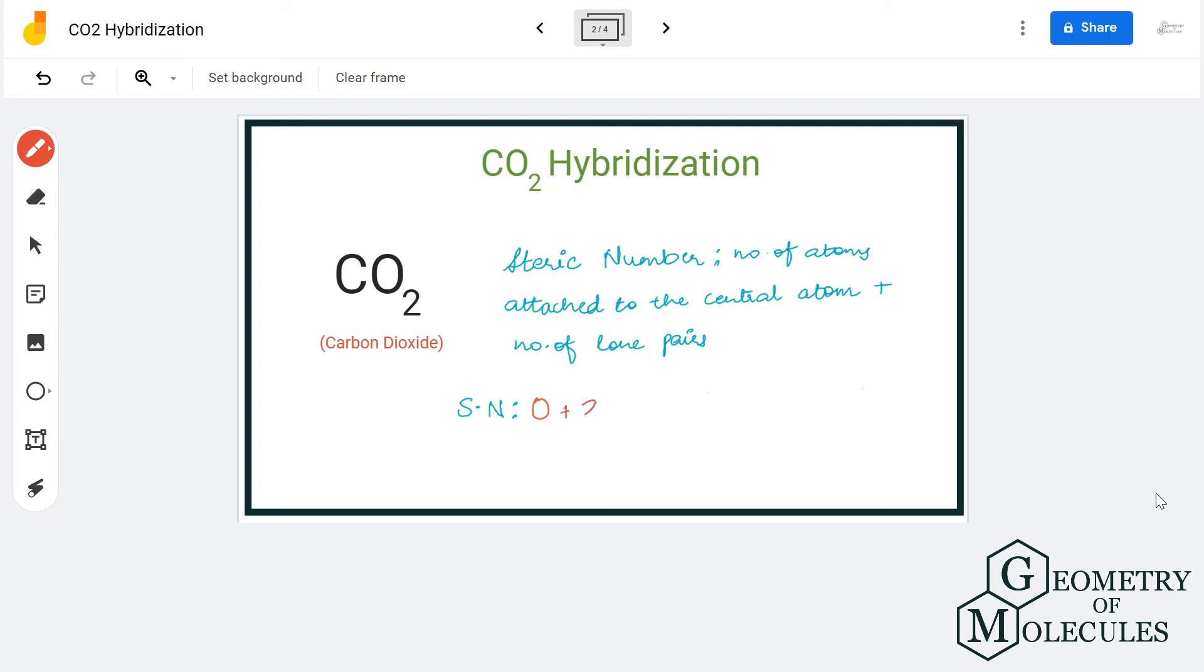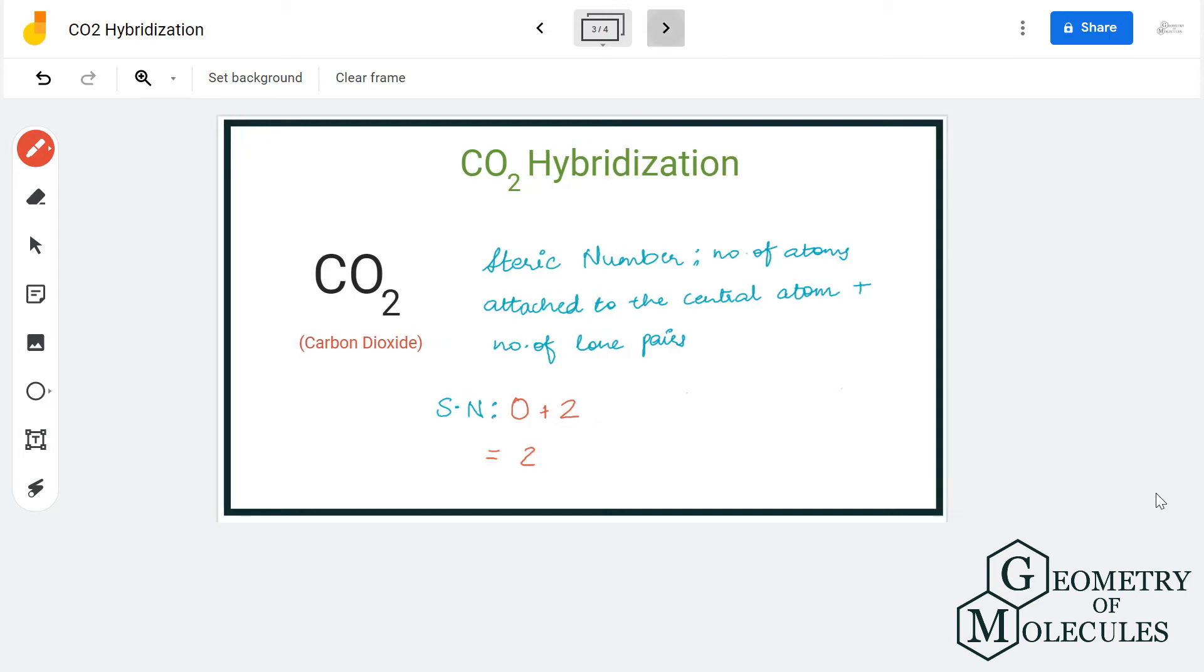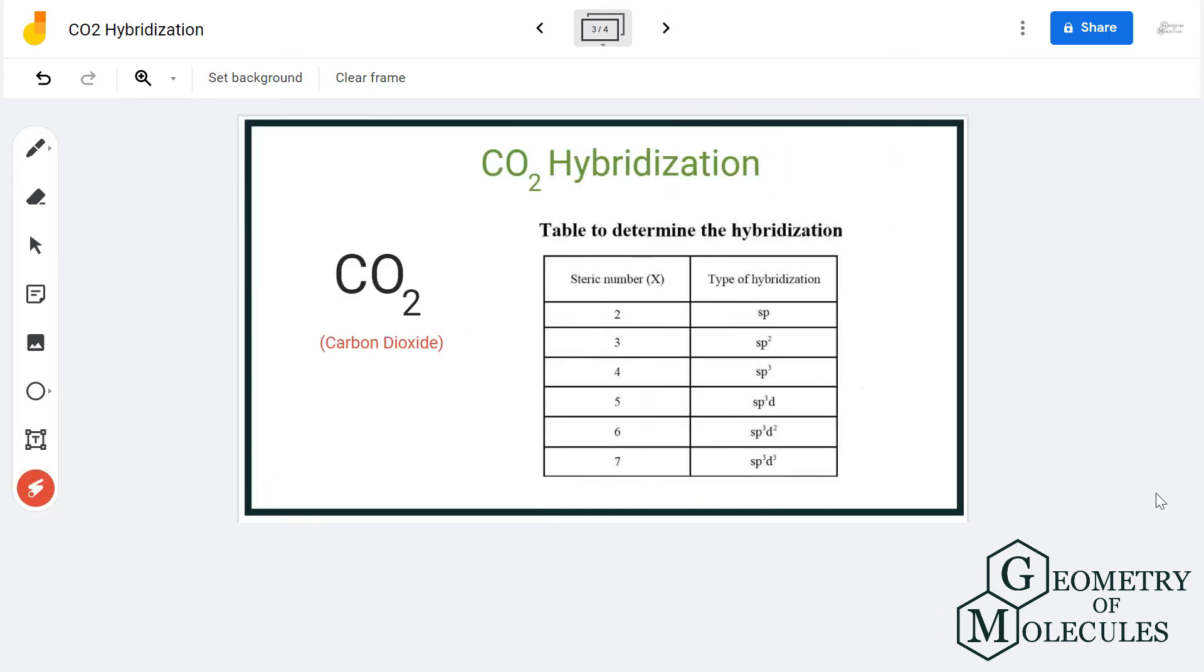It is bonded to two oxygen atoms, so the steric number for carbon will be two. And if you refer to this table, an atom having a steric number of two has sp hybridization. So carbon in CO2 has sp hybridization.